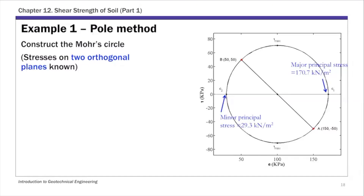The major and minor principal stresses can be read directly from the graph. The major is about 171 — 170 is also acceptable — and the minor is about 30 if you read it from the graph. You just read these two values; that's your principal stress values directly from the graph. Now let's look at the pole method.